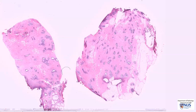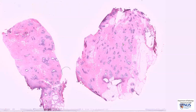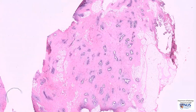This is a virtual microscopy slide from a case of gynecomastia, a lump in the male breast. At low magnification, we can see that there are both parenchymal or epithelial elements and stromal elements. The epithelial elements are composed of these ducts.